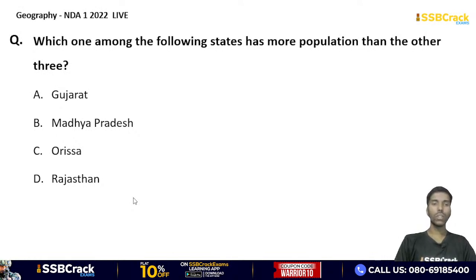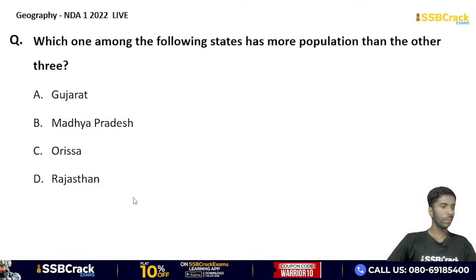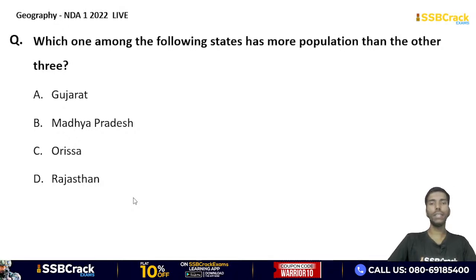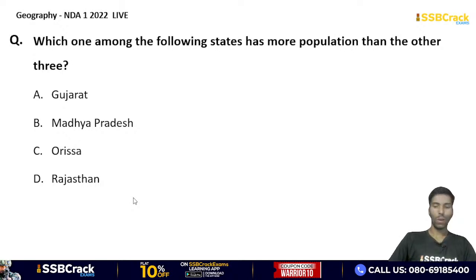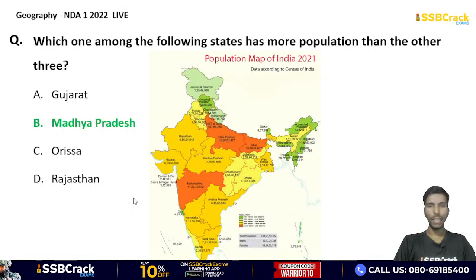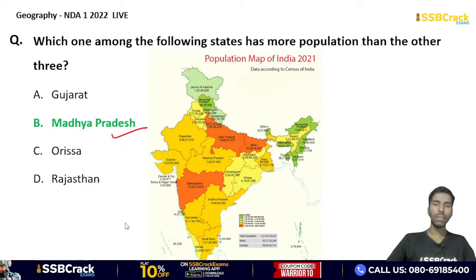The next question asks which state has the largest tribal population — Gujarat, Madhya Pradesh, Odisha, or Rajasthan? The correct answer is option B — Madhya Pradesh, with a population of approximately 8.5 crore. Gujarat, Odisha, and Rajasthan also have significant tribal populations, but MP has the largest.